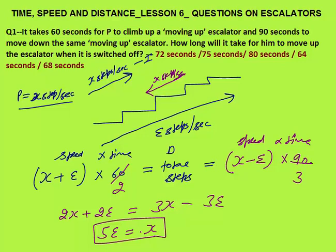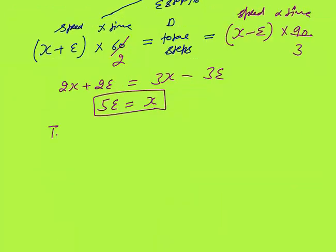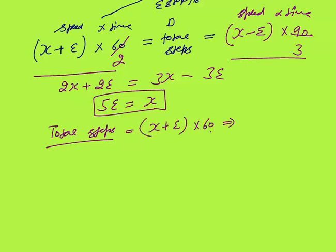The question asks: how long will it take P to move up the escalator when it is switched off? First calculate total steps. Total steps equals (x plus e) into 60. Substituting x as 5e: (5e plus e) into 60 equals 6e into 60, which is 360e. Since we cannot find exact values of e and x, total steps are 360e.